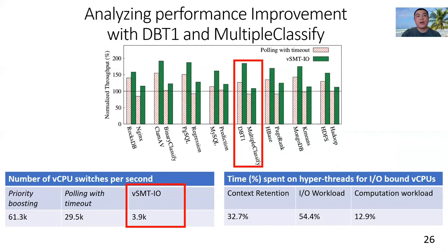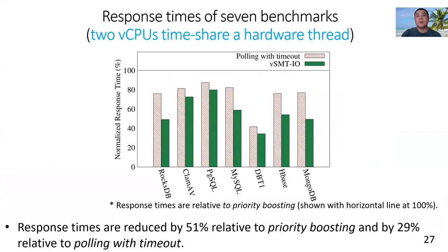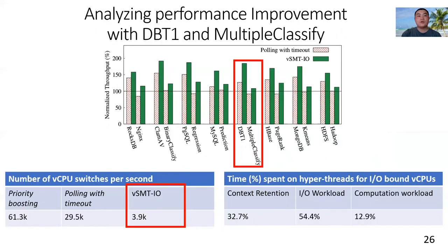For IO efficiency, we find that the high efficiency of vSMTIO comes partially from its capability to reduce VCPU switches. It also comes from vSMTIO controlling the time spent on context retention. With context retention well controlled, more CPU time can be used by multiple classification to improve processor throughput.